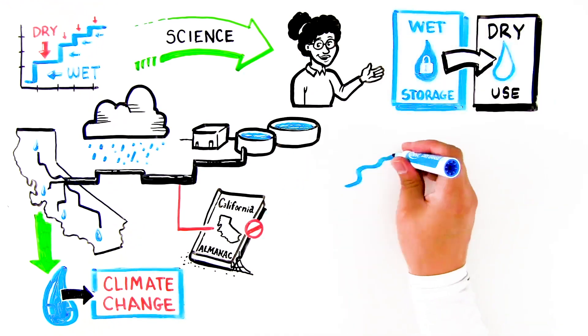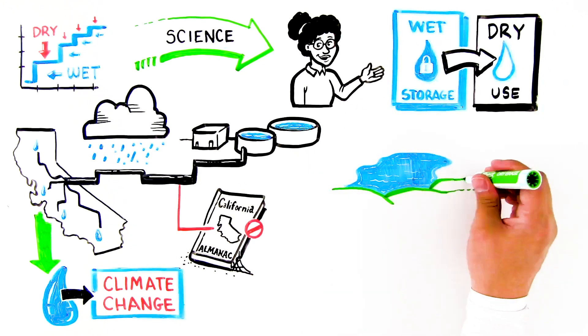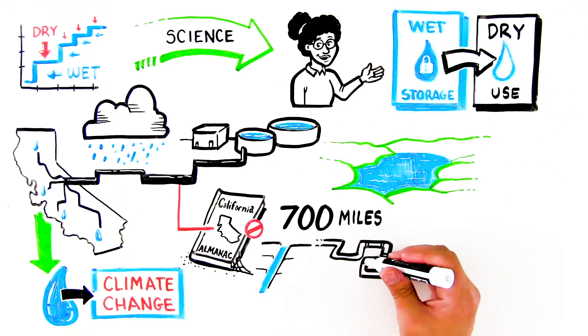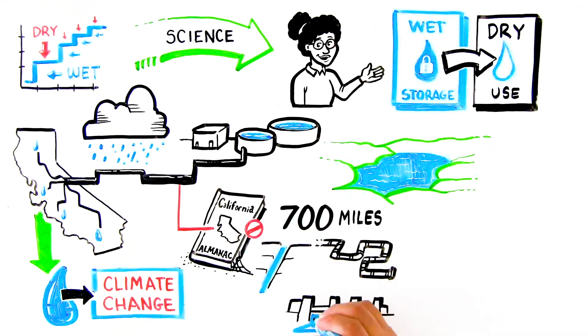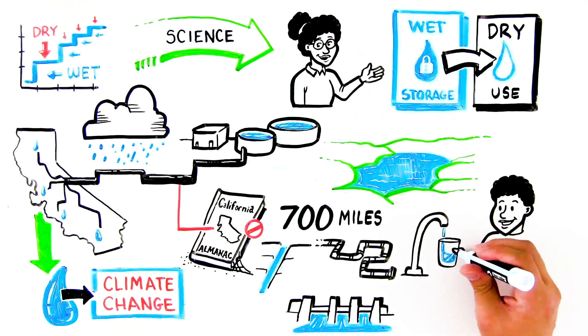Whether we're talking about storing water above ground, below ground, or the way we move and pump water through 700 miles of canals, pipelines, and hydroelectric facilities to get that water to your tap, none of it would be possible without our water infrastructure.